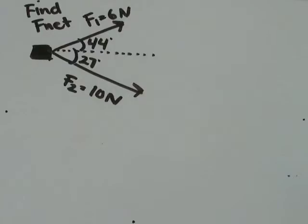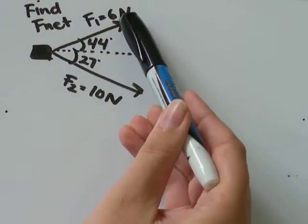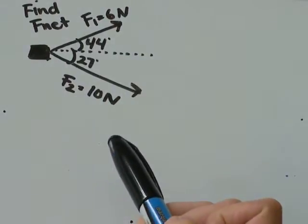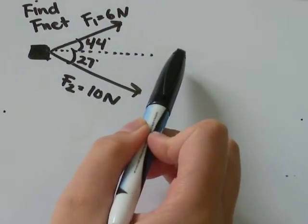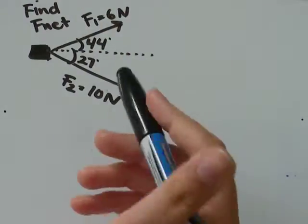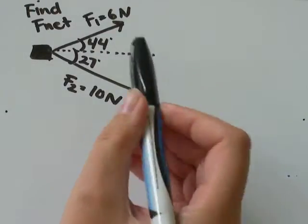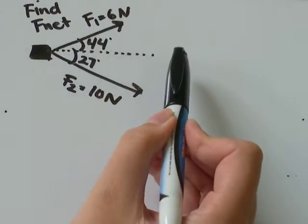So what we have here is an object and it's being pulled kind of in two different directions. It's being pulled by this first force up here that has a magnitude of 6 newtons and that makes a 44 degree angle with respect to traveling in a straight line. The second force is a magnitude of 10 newtons and it's pulling at a 27 degree angle with respect to going in a straight line.